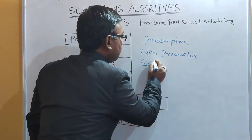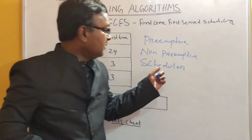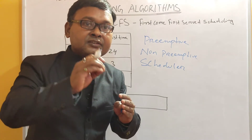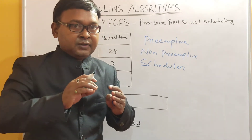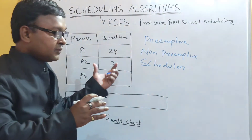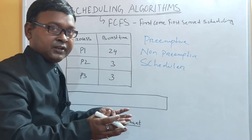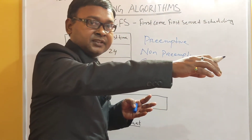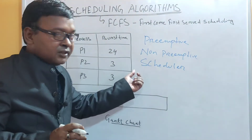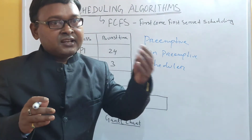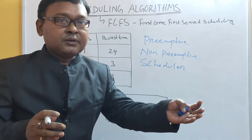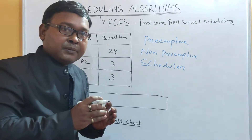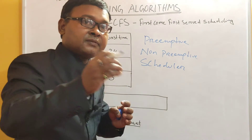Next, what do you mean by scheduler? A scheduler is a system software which is responsible for scheduling your jobs or processes to the processor. The processes are in the RAM — the primary memory — and they have to be scheduled properly and sent to the processor for execution. The scheduler is also a system software that comes along with your operating system.